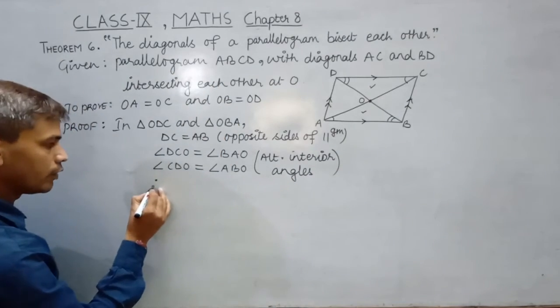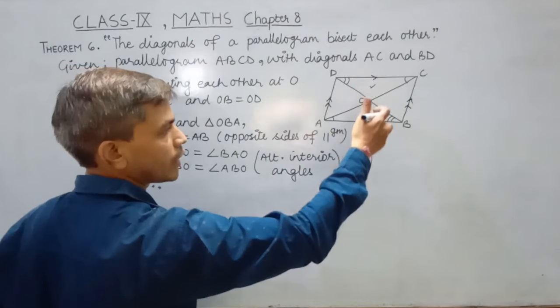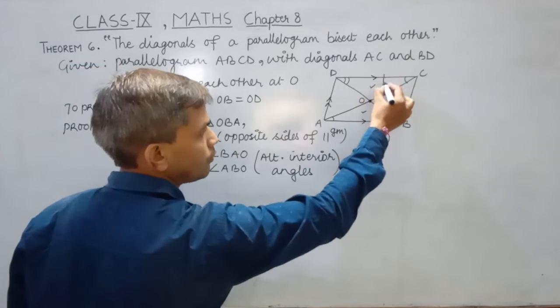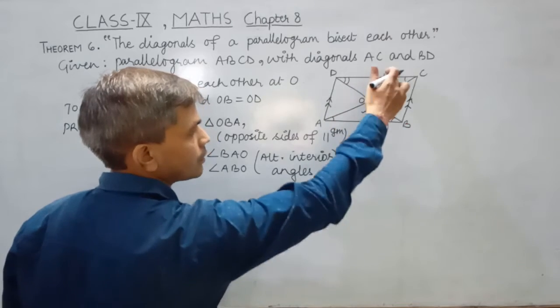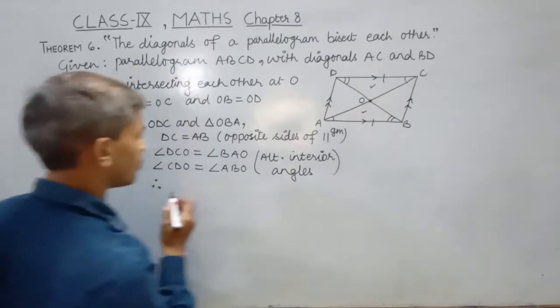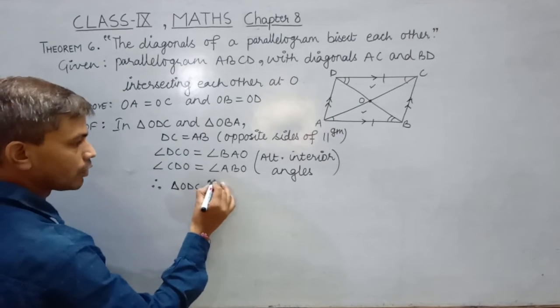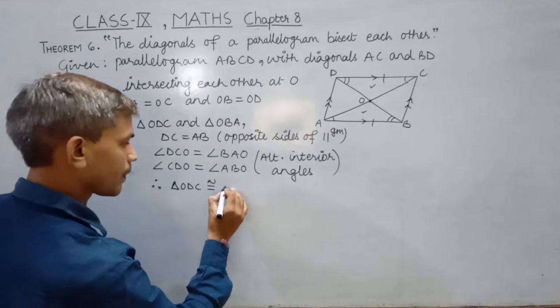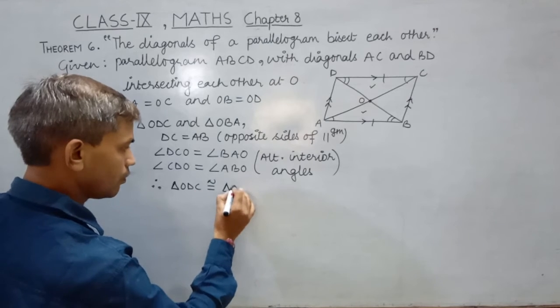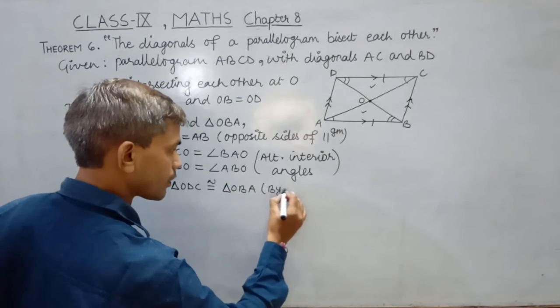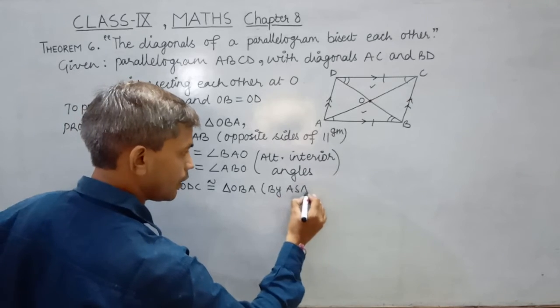Therefore, these two triangles are found congruent due to angle side angle rule. So triangle ODC is congruent to triangle OBA by ASA rule.